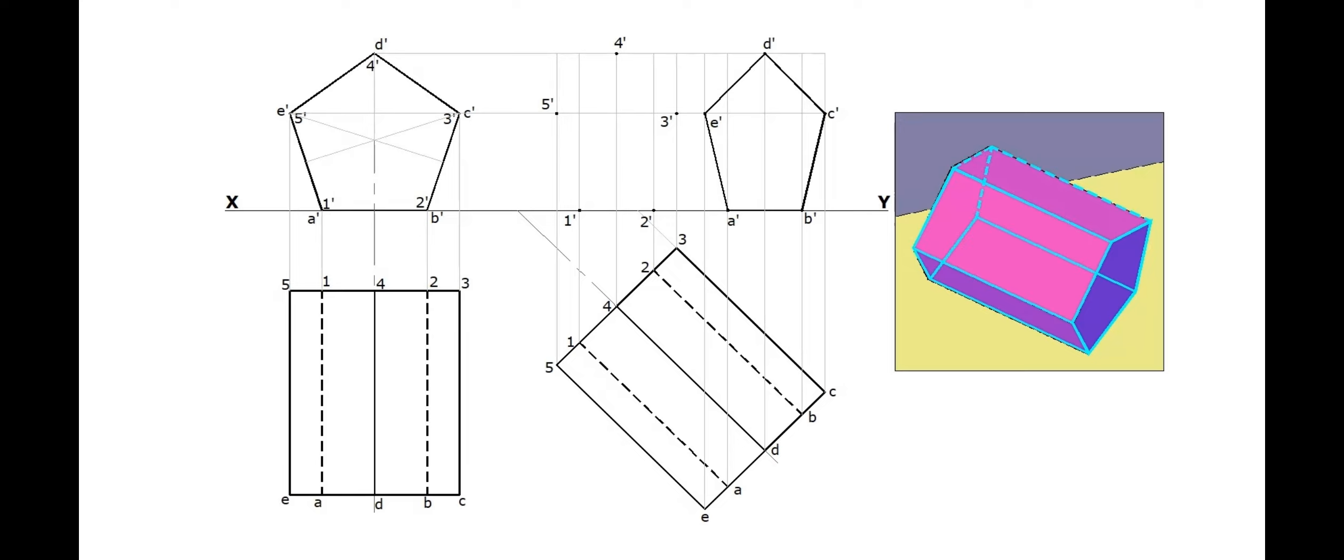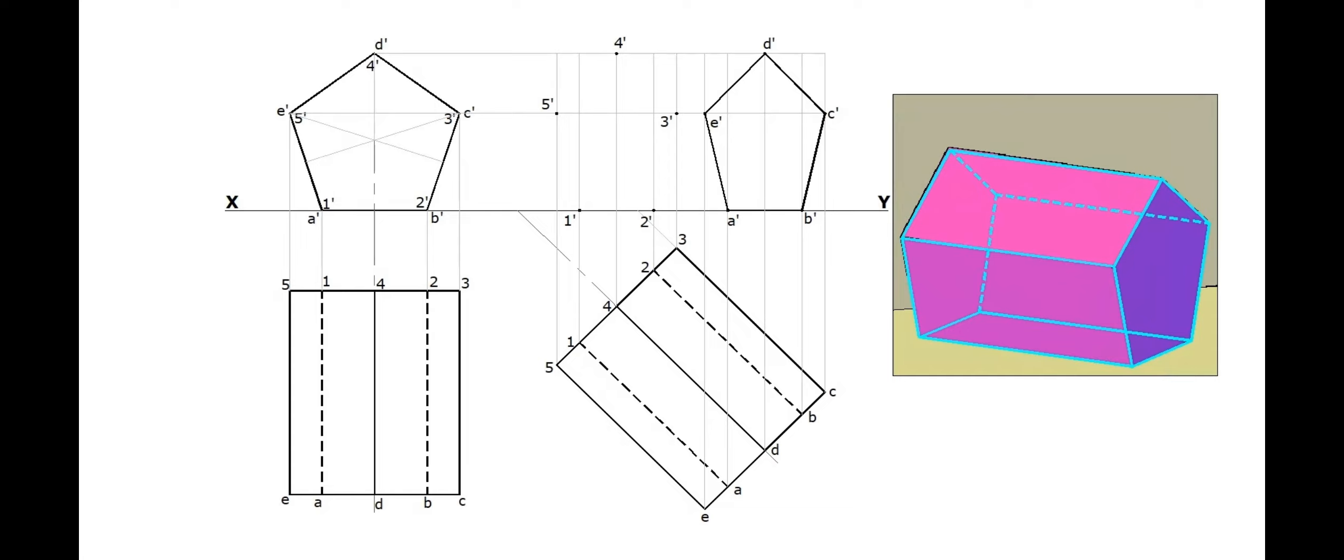Rear base is partially visible. Edges 4' 5' and 5' 1' are visible. Edges 2' 3' and 4' 3' are invisible. Hence, should be drawn as dashed lines.